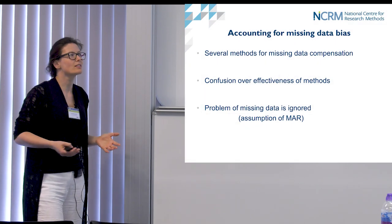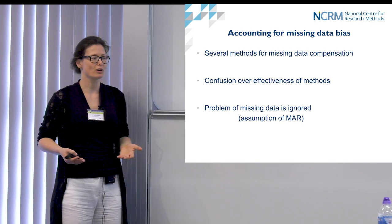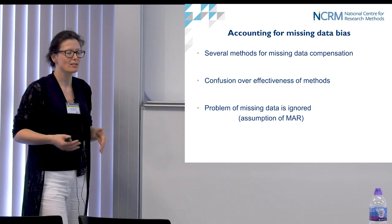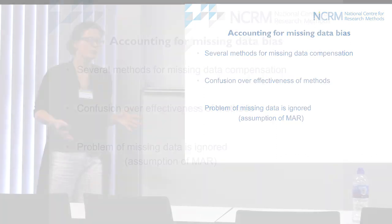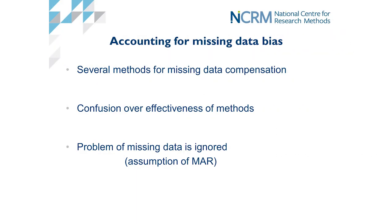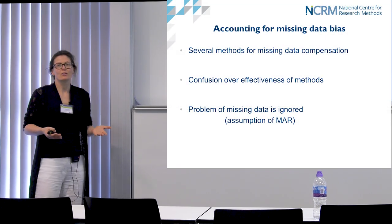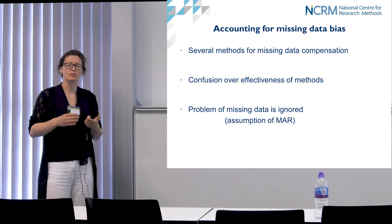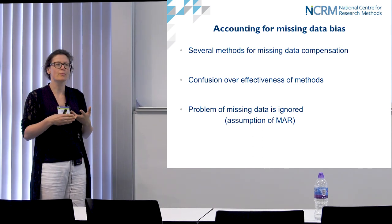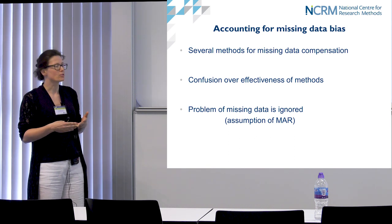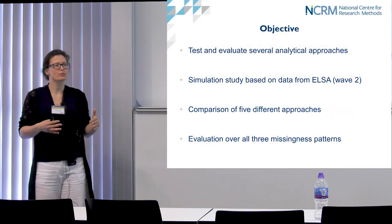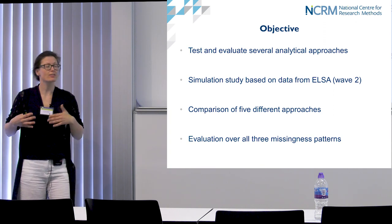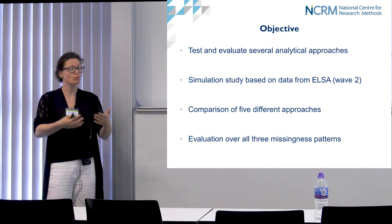This is not a new problem; it's only new now since we're trying to apply it to biomarker research. Missing data has always occurred as long as there has been survey data. There are several methods out there, but there is concern and confusion about the effectiveness of those methods, which unfortunately leads in many cases to either ignoring missing data bias completely or simply assuming MCAR or MAR where no further compensation methods are used. This study tests and evaluates several analytical approaches to compensate for missing data.